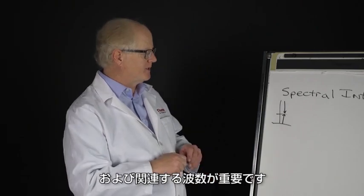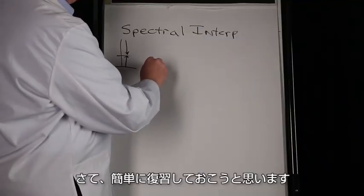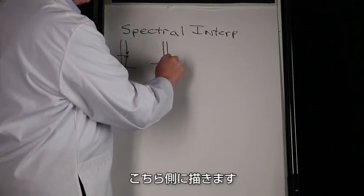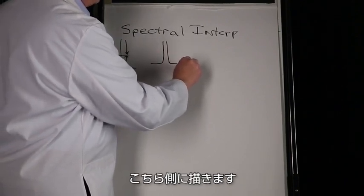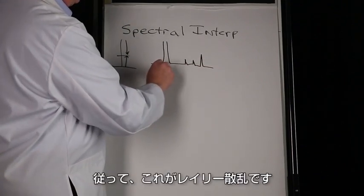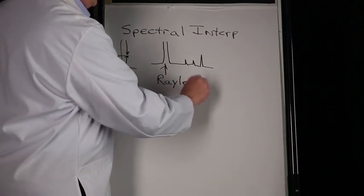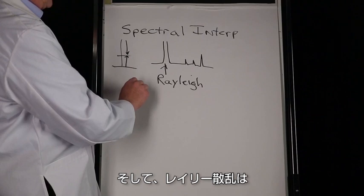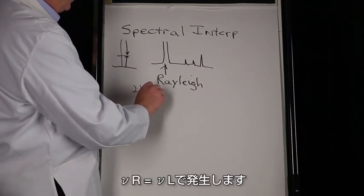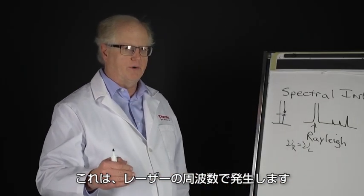Now just briefly to touch on that - remember you've got the Rayleigh line. I'm going to draw them going this way, and then you have a series of peaks. So this is my Rayleigh line, and that Rayleigh line occurs at ν_R equals ν_L.